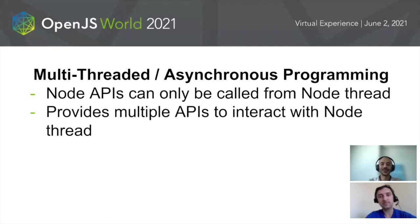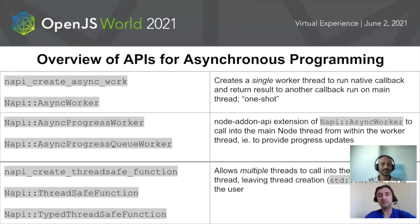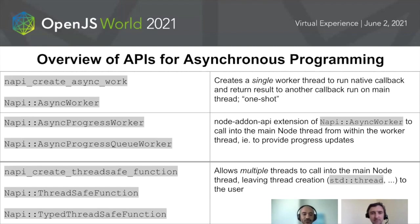Node APIs can only be called from the Node thread. There exist multiple APIs to facilitate communication between your application and the native Node thread. There are multiple different ways to perform asynchronous programming with Node. We have the async worker, which creates a single worker thread that will execute your logic, and when your logic is completed, you can call back to the Node thread with the result.